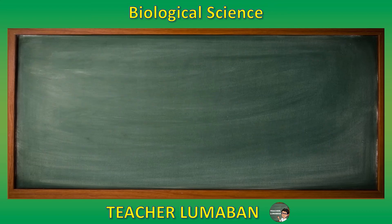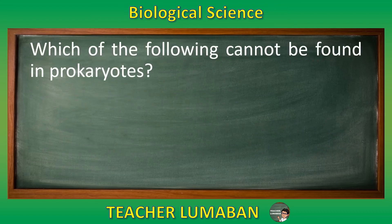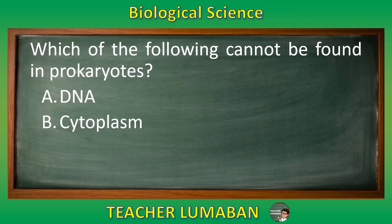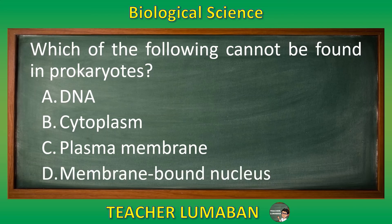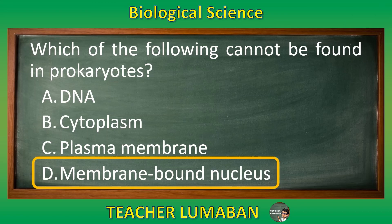Which of the following cannot be found in prokaryotes? Letter A: DNA. Letter B: Cytoplasm. Letter C: Plasma membrane. Letter D: Membrane-bound nucleus. The correct answer is letter D — membrane-bound nucleus. The membrane-bound nucleus cannot be found in prokaryotes.